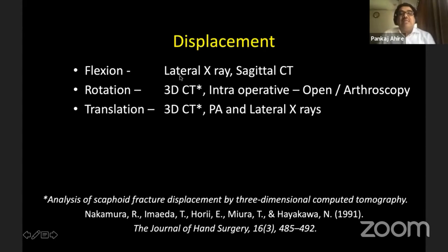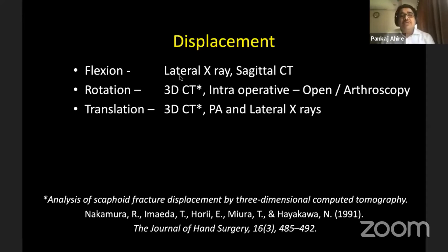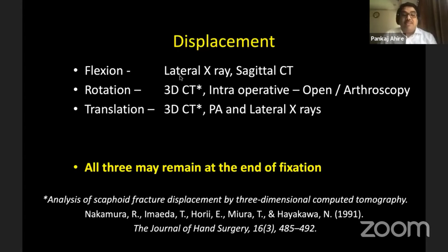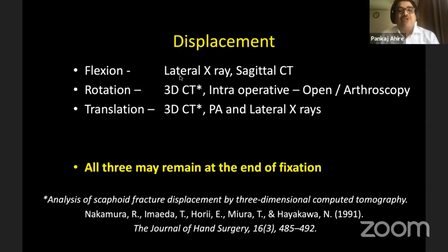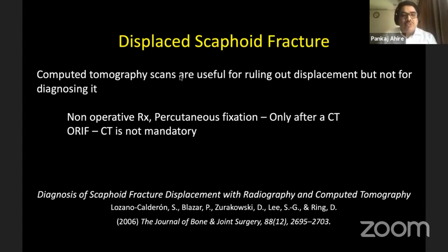Not all of these are easily visible on the lateral x-ray or only on a tomogram. Sometimes you require a 3D CT scan, and even for CT scan the inter-observer error is as much as 20% among surgeons. Therefore, despite best efforts, all three deformities may remain at the end of fixation, and perhaps open reduction of a displaced fracture rather than an attempted percutaneous fixation is a better idea. CT scan is obviously useful when you want to treat a fracture conservatively that looks undisplaced on x-ray and you want to confirm that it is undisplaced.